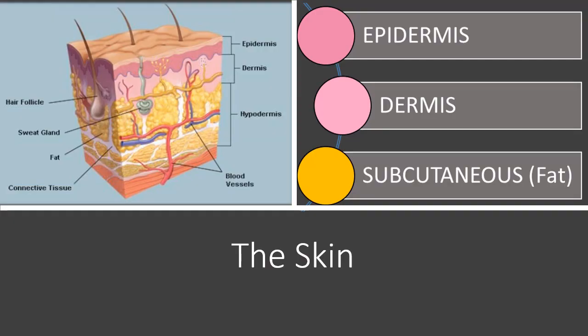The skin is the largest organ of the body. There are three layers: the epidermis, the dermis, and the subcutaneous tissue, also referred to as the hypodermis. The epidermis primarily provides protection, separating the external world from the internal world. It is your primary defense mechanism — as long as you have intact skin, you are well defended from many external organisms.